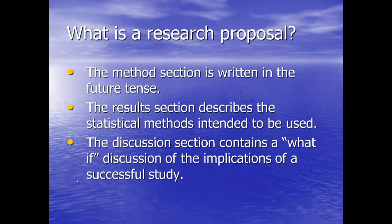The methods section is written in the future tense because these are things that you plan to do. The results section doesn't have any results in it, so you just describe the statistical tests that you plan to use and also include a power analysis, that is an analysis of how many subjects you'll need to have the power that you want. And then the discussion section doesn't have any results to discuss, so usually it exists as a what-if discussion of the implications of the study if it was successful.